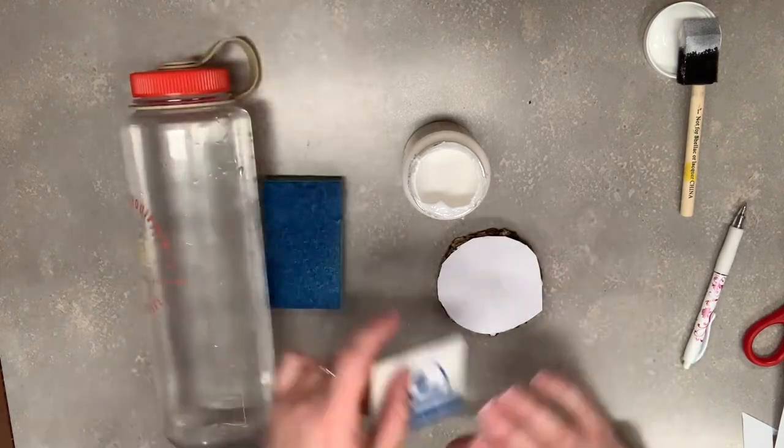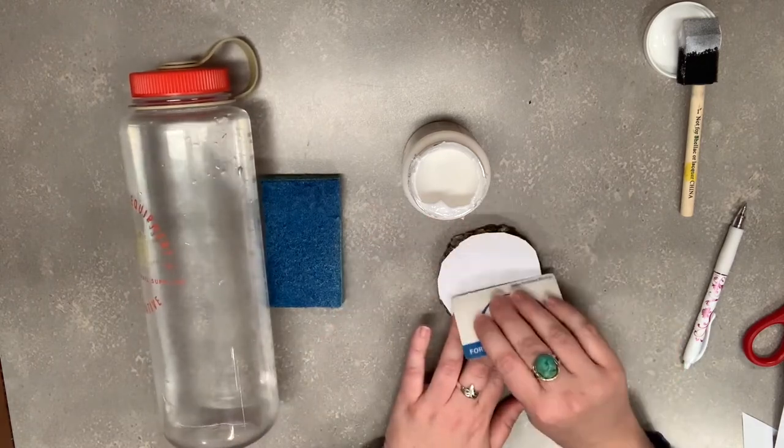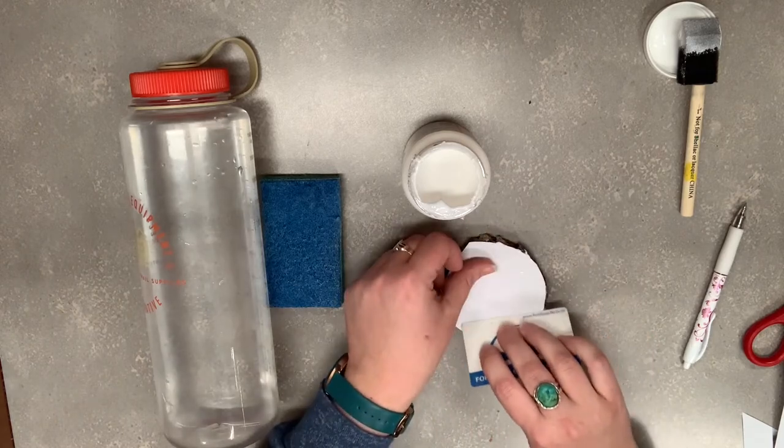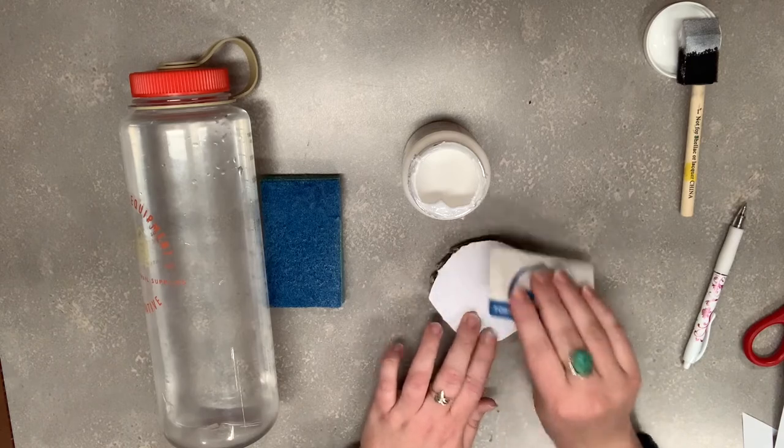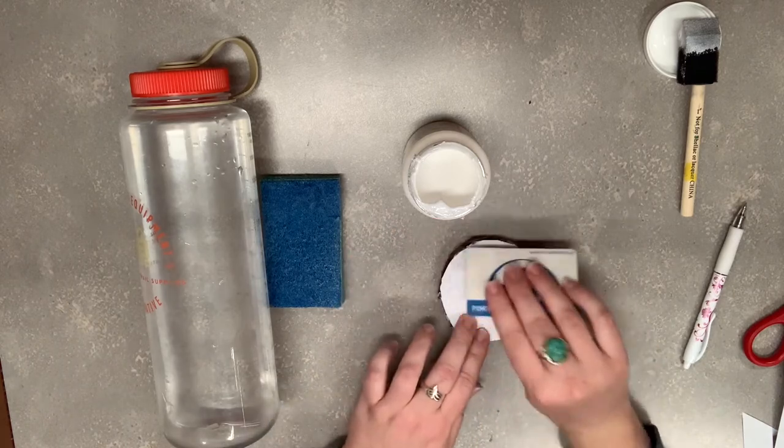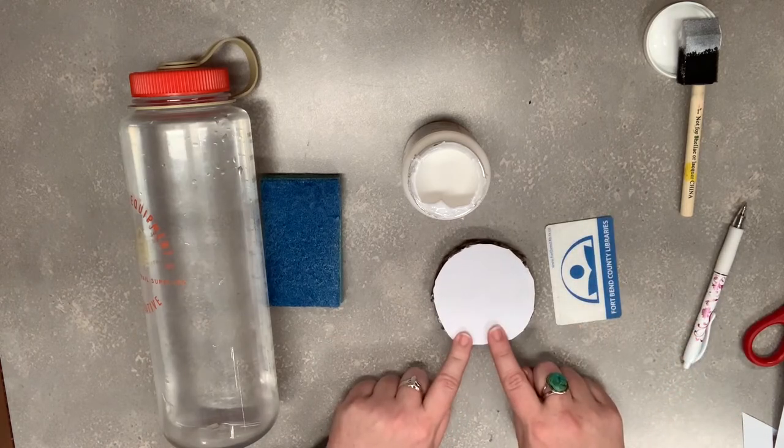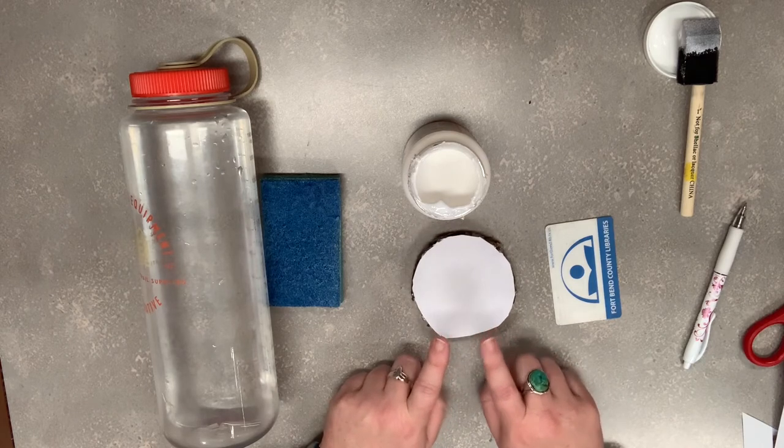All right, so once you have it placed down, you're going to take your library card or whatever you're using and smooth it out, because you don't want any air bubbles underneath. All right, so this one is ready to dry. I'm going to let it sit overnight before I proceed to the next step.